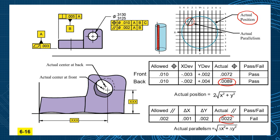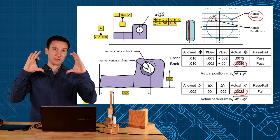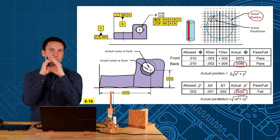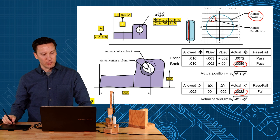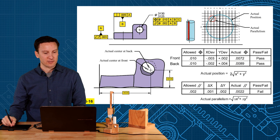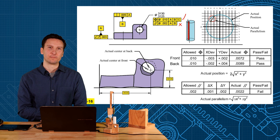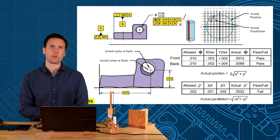So you have a bigger zone of position fixed on the true position and then the smaller zone that can float inside. So this would pass the position tolerance while failing the parallelism. Hopefully that made sense for you. I have an exercise for you to practice with that on your own.